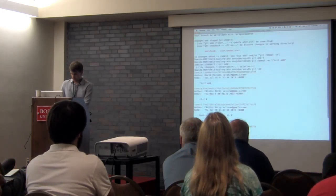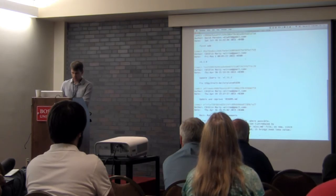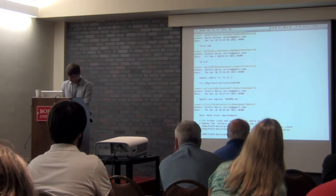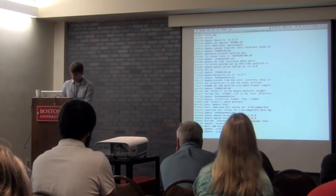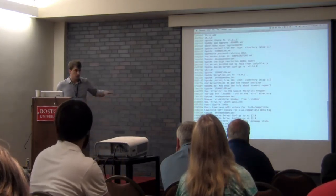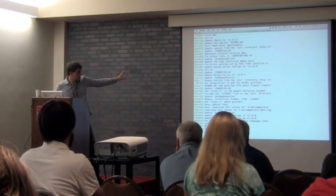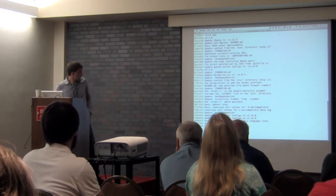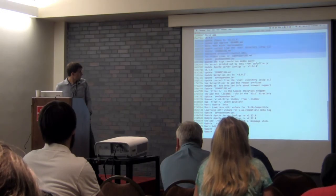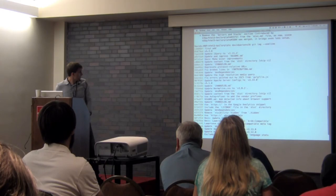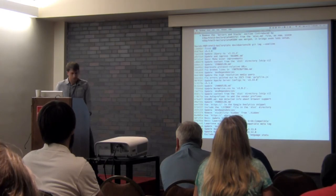I've added and committed. Now I can run `git log`. There's a lot of information, so I like to use `git log --oneline`. You can see this repository has been around for a long time — all the changes that have been made in the past are listed, and then there's my first commit at the top.